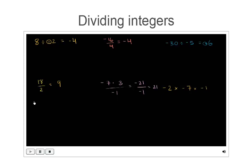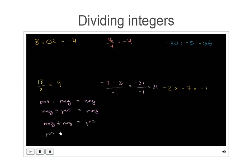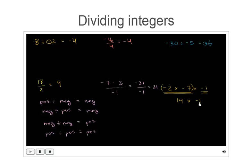Now let's try a problem with three numbers being multiplied: negative 2 times negative 7 times negative 1. Going left to right, negative 2 times negative 7 — both negative, negatives cancel out — gives positive 14. Then positive 14 times negative 1 — exactly one is negative — gives negative 14.